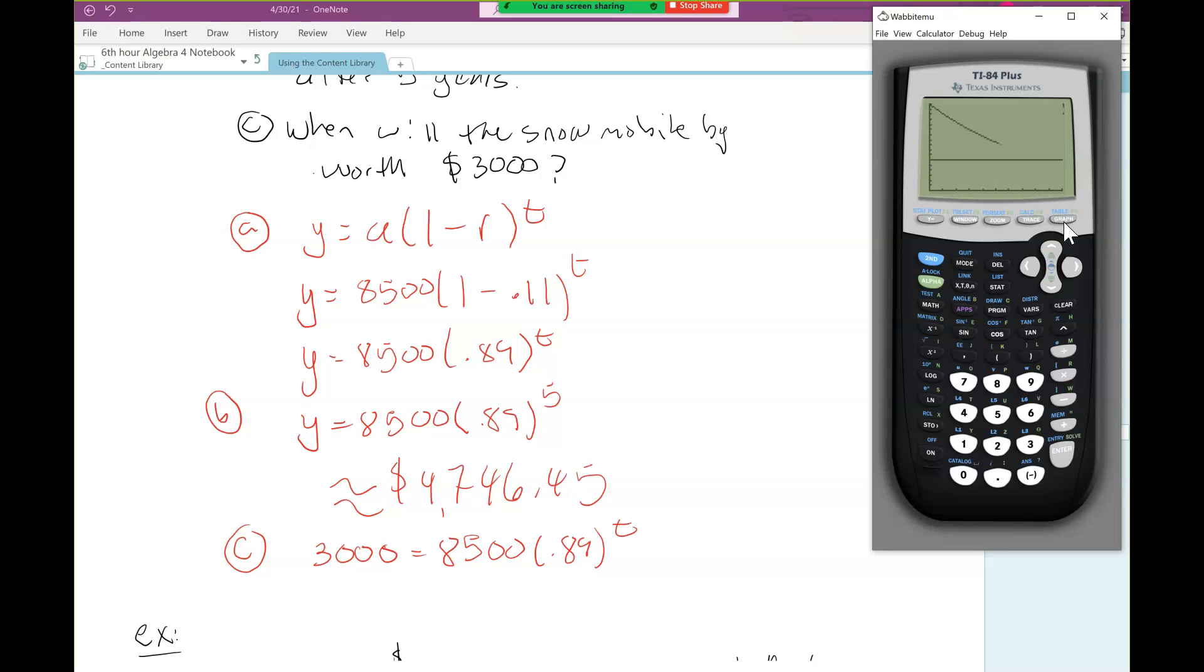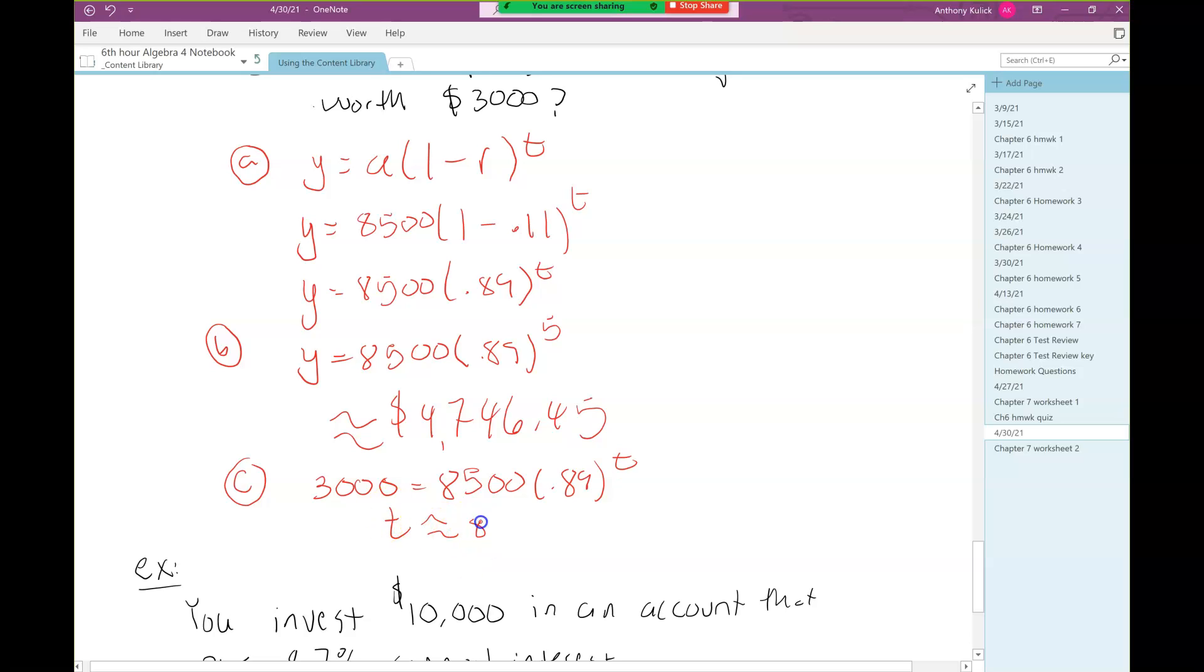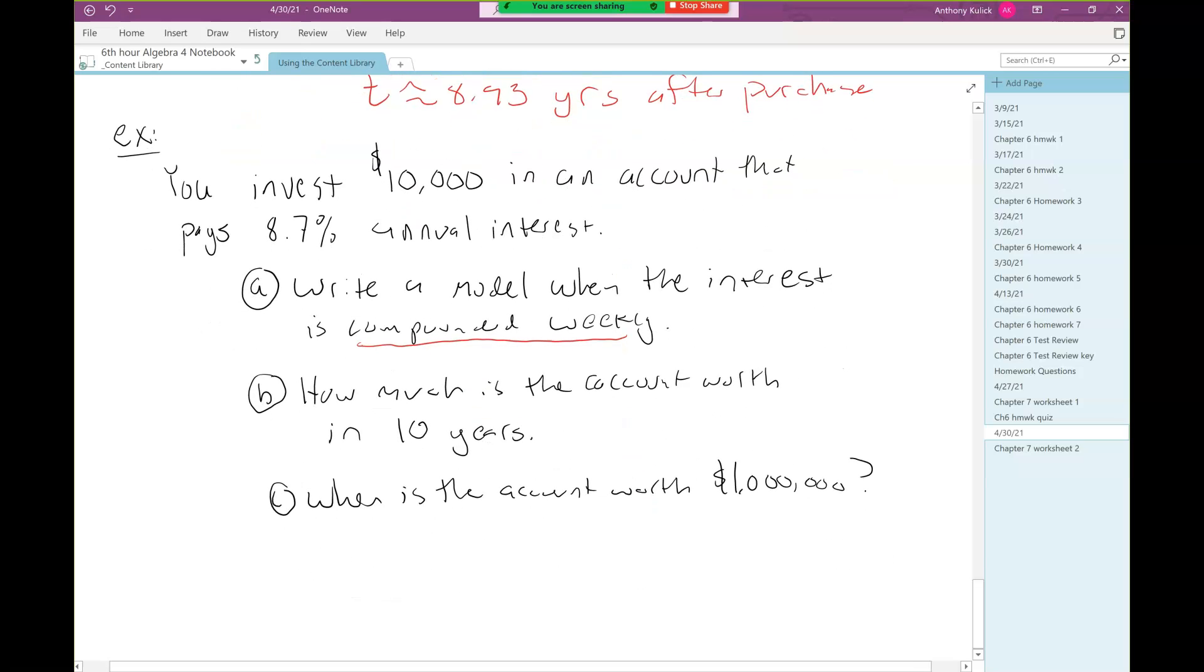Let's hit graph. There's my $3,000 line. Here's my decay curve. We just barely made it in there. If we didn't see the intersection, we'd just go back and pick a bigger x max. We press 2nd then trace, pick the intersect command, then enter three times. We get 8.93. So about 8.93 years after purchase is when it's worth $3,000.